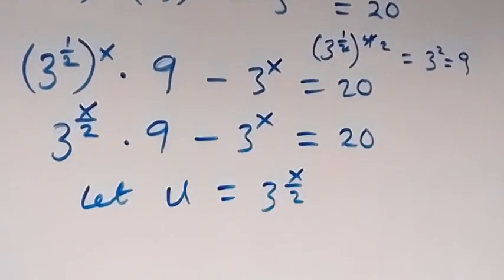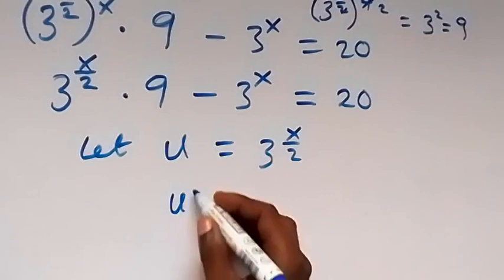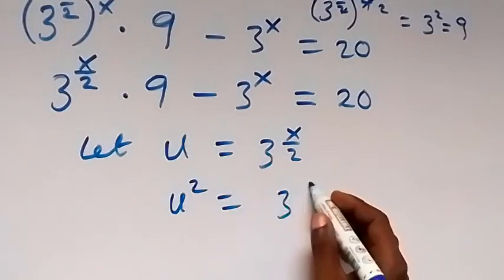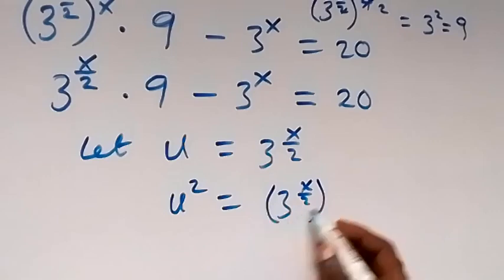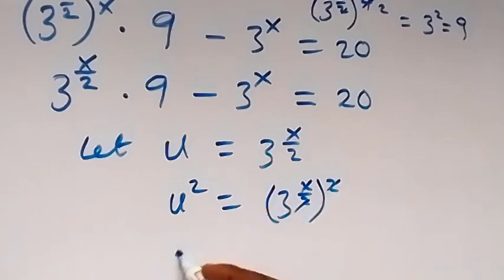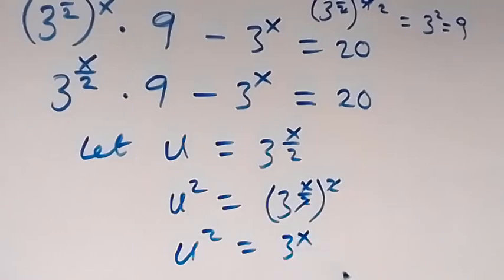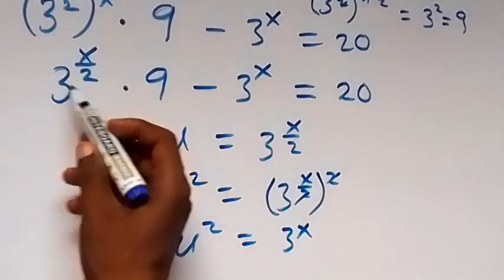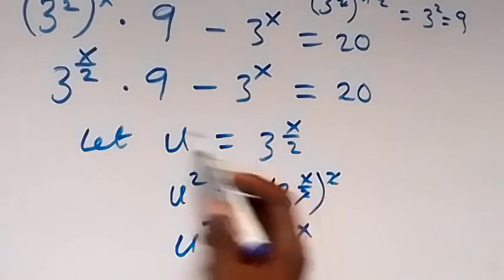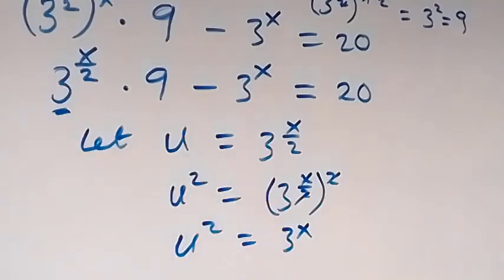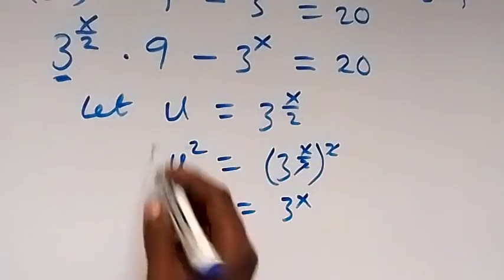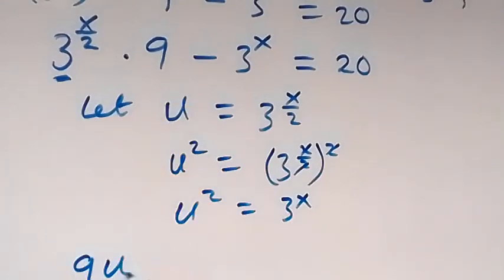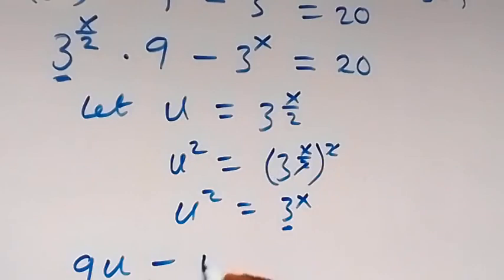When we square both sides, u squared will equal 3 raised to power x over 2, squared. The square cancels the x over 2, meaning u squared equals 3 raised to power x. So we can rewrite the equation in terms of u: 3 raised to power x over 2 becomes u, giving us 9u minus u squared equals 20.